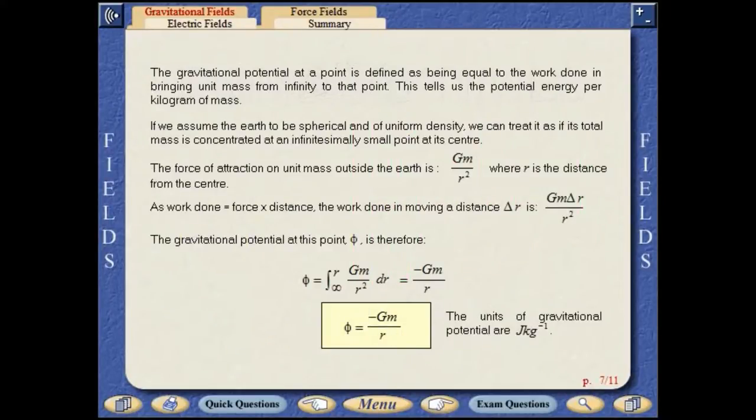The gravitational potential at a point is defined as being equal to the work done in bringing unit mass from infinity to that point.